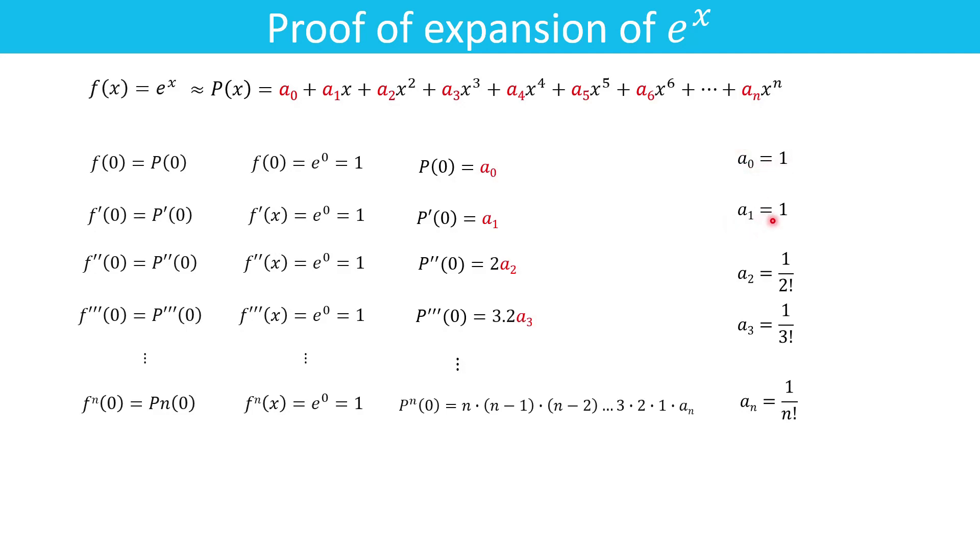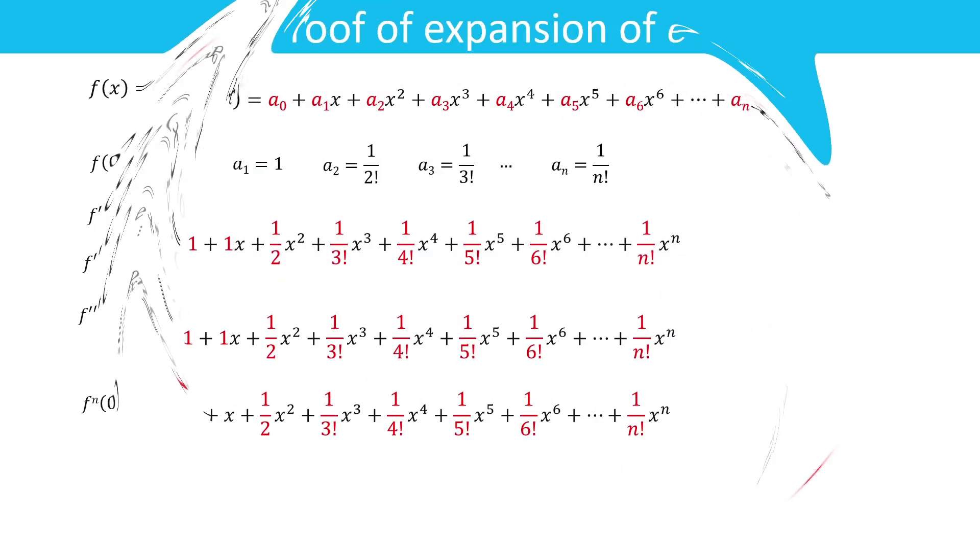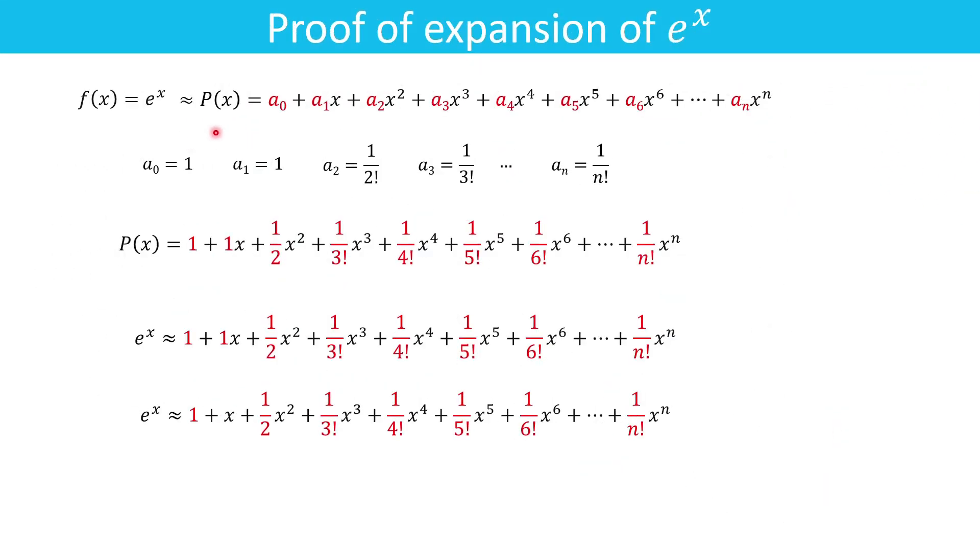a₁ = 1, a₂ = 1/2 = 1/2!, a₃ = 1/3!, and so on up to aₙ = 1/n!. Now we can simply substitute the value of a₀, a₁, a₂, and so on up to aₙ in the polynomial P(x).